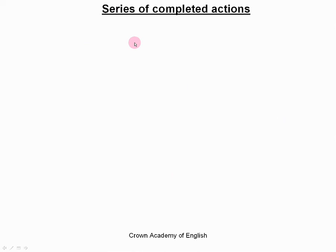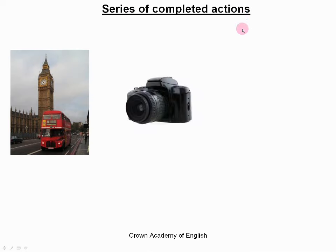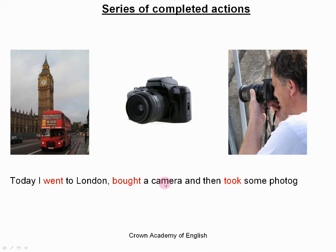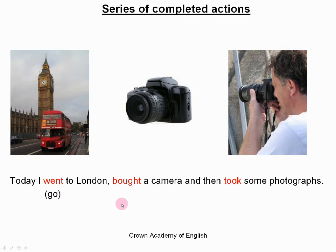We also use the past simple to describe a series of completed actions. For example: today I went to London, bought a camera and then took some photographs. We have the subject 'I' followed by a list of completed actions, all in one sentence, with each verb in the past simple. 'Went' is past simple of 'go', 'bought' is past simple of 'buy', and 'took' is past simple of 'take' — these are irregular verbs.